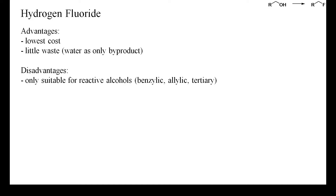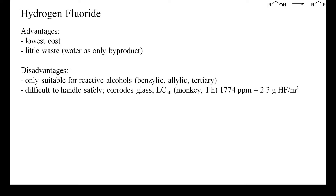Unfortunately, only few alcohols undergo clean transformation into the corresponding alkyl fluorides by treatment with hydrogen fluoride. Only readily carbocation-forming alcohols such as allylic, benzylic, or tertiary alcohols are suitable starting materials and yields are often low. Although hydrogen fluoride does not cleave peptide bonds, it is very destructive to living tissue and must be handled with great care. The lethal concentration at which 50% of test animals die within one hour is only 0.2%, and in many industries the large-scale use of neat hydrogen fluoride is being phased out due to safety concerns. Moreover, hydrogen fluoride corrodes glass. A further disadvantage is its high tendency to cause polymerization reactions, which may be one of the reasons for the low yields of most deoxyfluorination reactions.